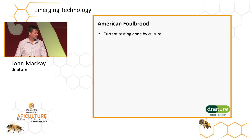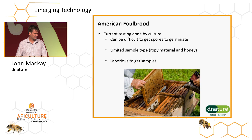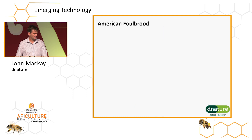The current testing is done by culture. It can be difficult to get spores to germinate. You've got limited sample types — typically ropey material and honey — and it's laborious to get samples. You're having to dismantle hives, pull out frames to look for ropey material, or pull off honey supers to get your bee samples.